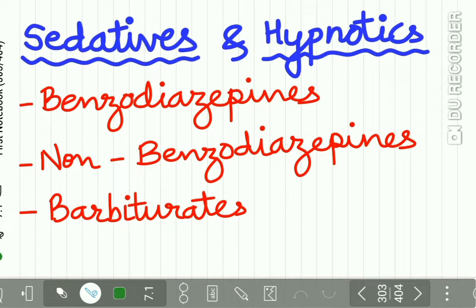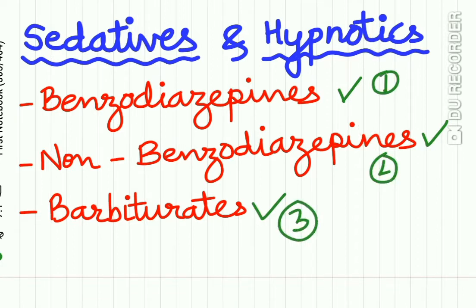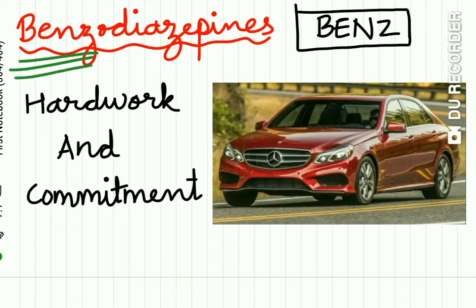Sedatives and hypnotics are classified into three groups: first, benzodiazepines; second, non-benzodiazepines; and third, barbiturates.